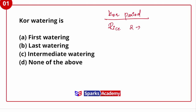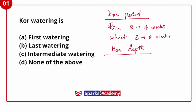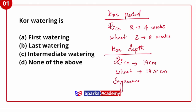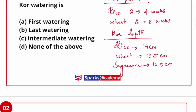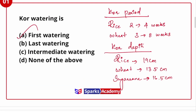This is the growing season: for wheat, 2 to 4 weeks; for wheat, 3 to 8 weeks — we have to give core watering. We also consider the depth of water applied to the particular plant. For rice, what is the core depth? These are easy questions we can solve. So the first question answer is: core watering is the first watering.